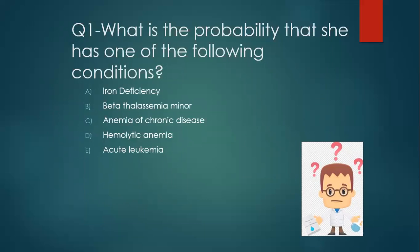The first differential diagnosis is iron deficiency. B: beta thalassemia minor. C: anemia of chronic disease. D: she could be a case of hemolytic anemia. And E: she could be a case of acute leukemia.